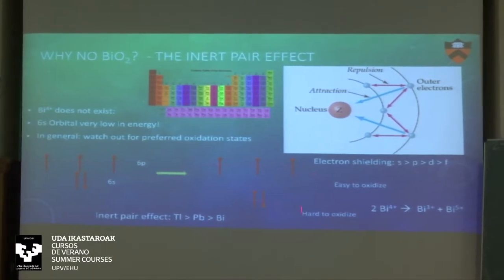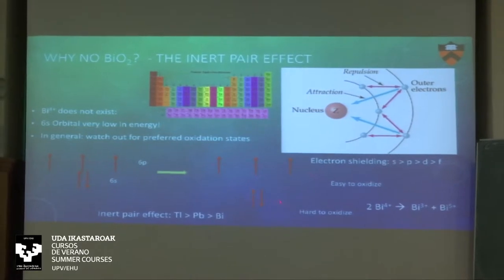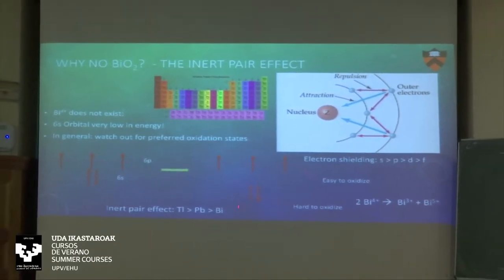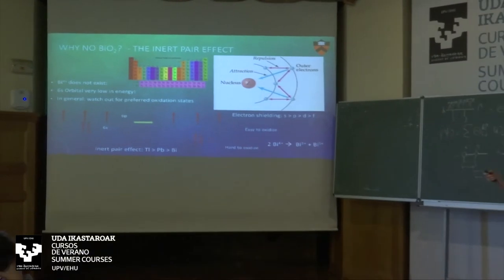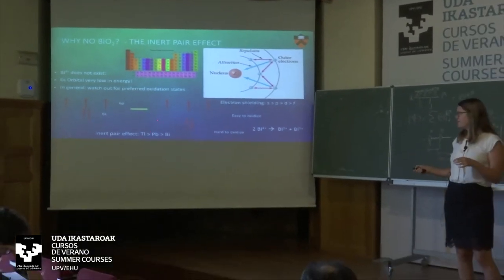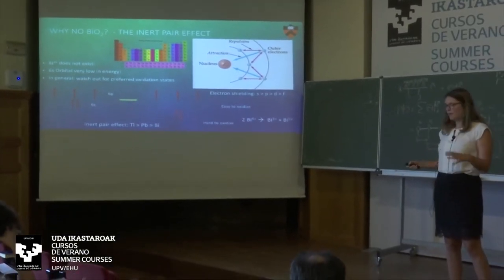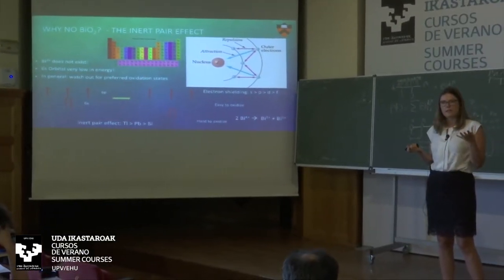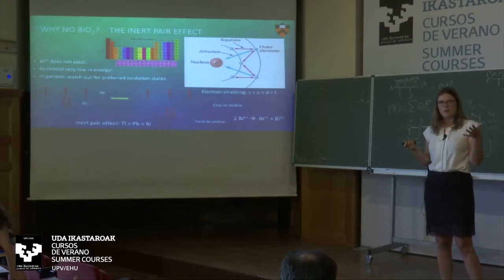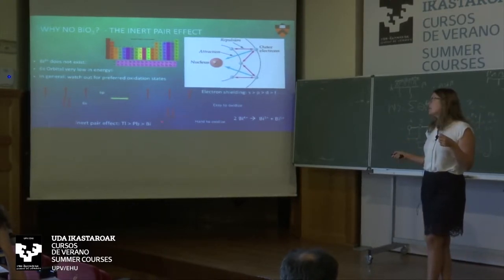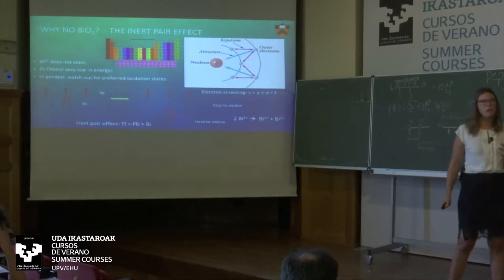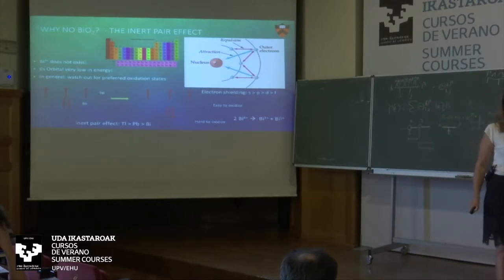Because the 6s electrons are lowered in energy so much due to these shielding effects, this is called the inert pair effect — they usually aren't emptied out. So thallium will always stay 1+, lead will always stay 2+, and bismuth will always stay 3+ with very few exceptions.